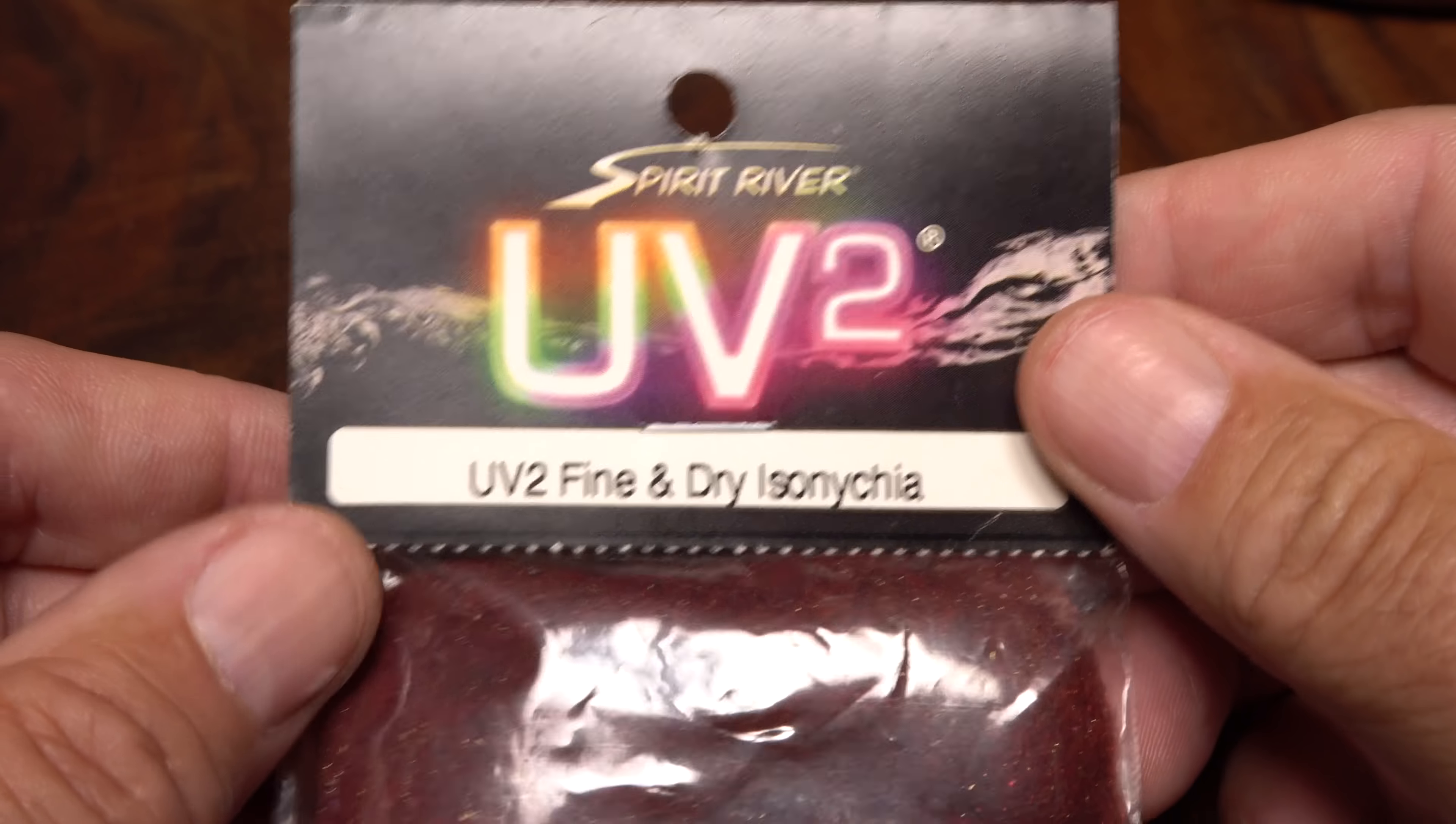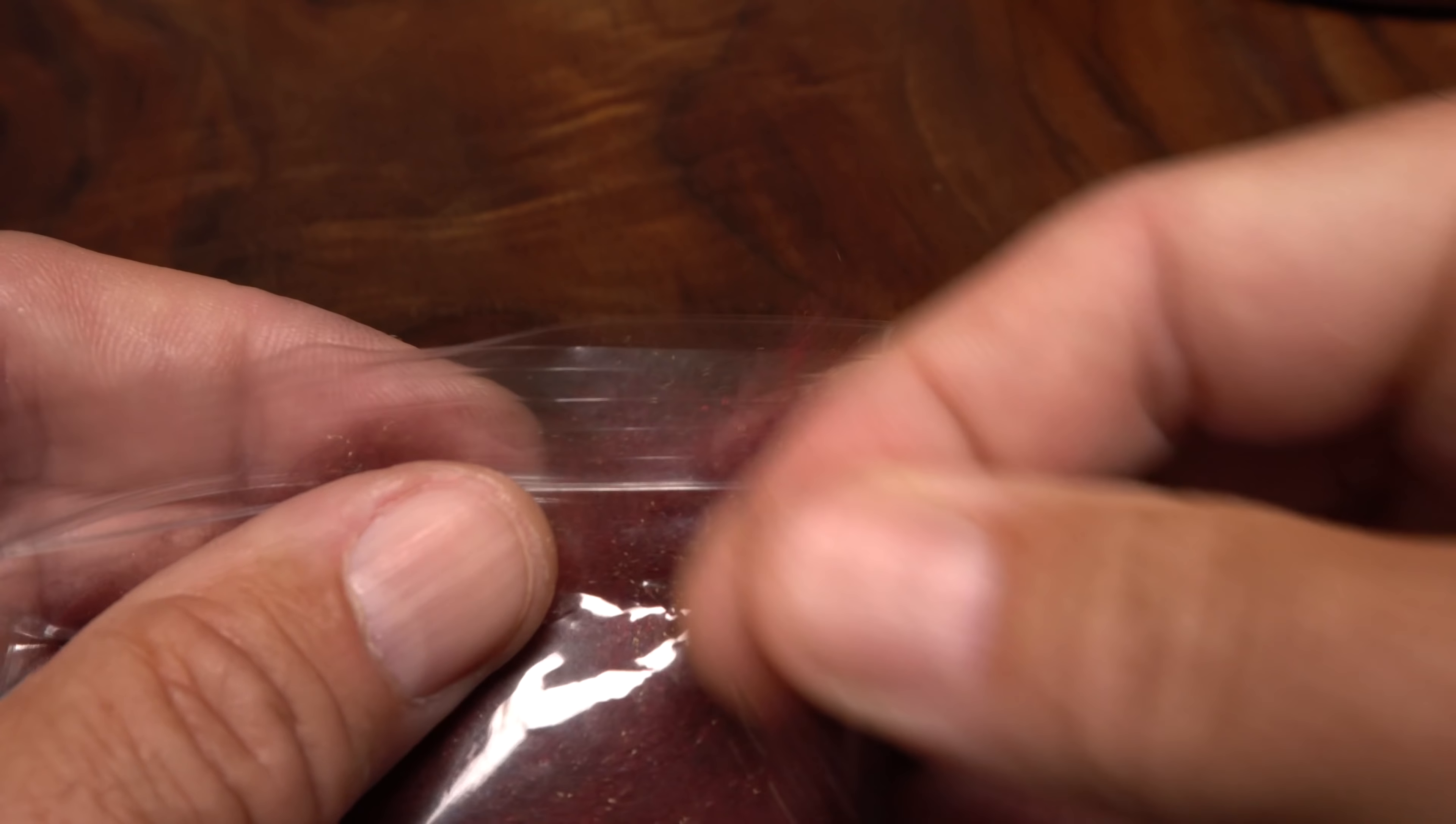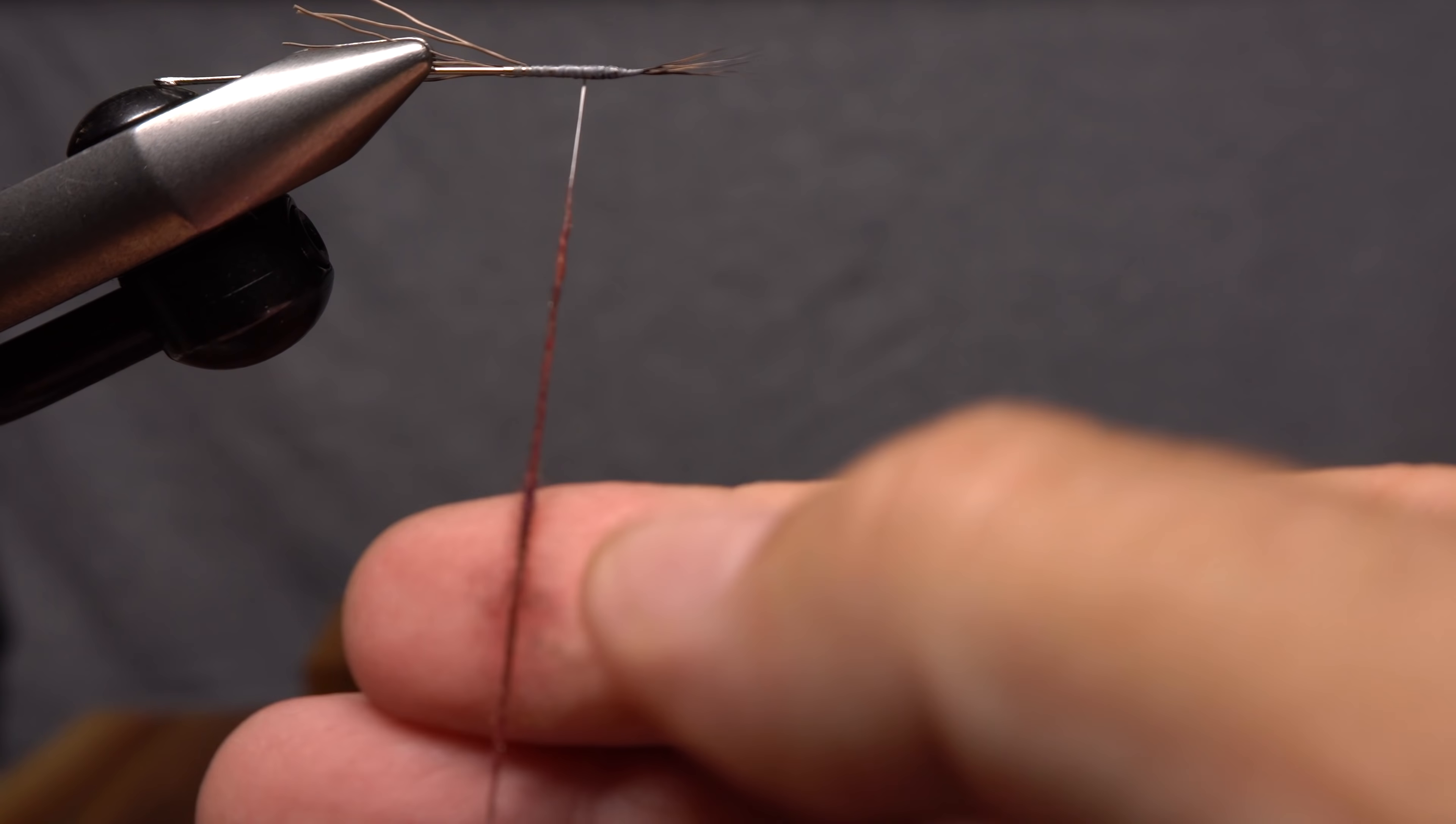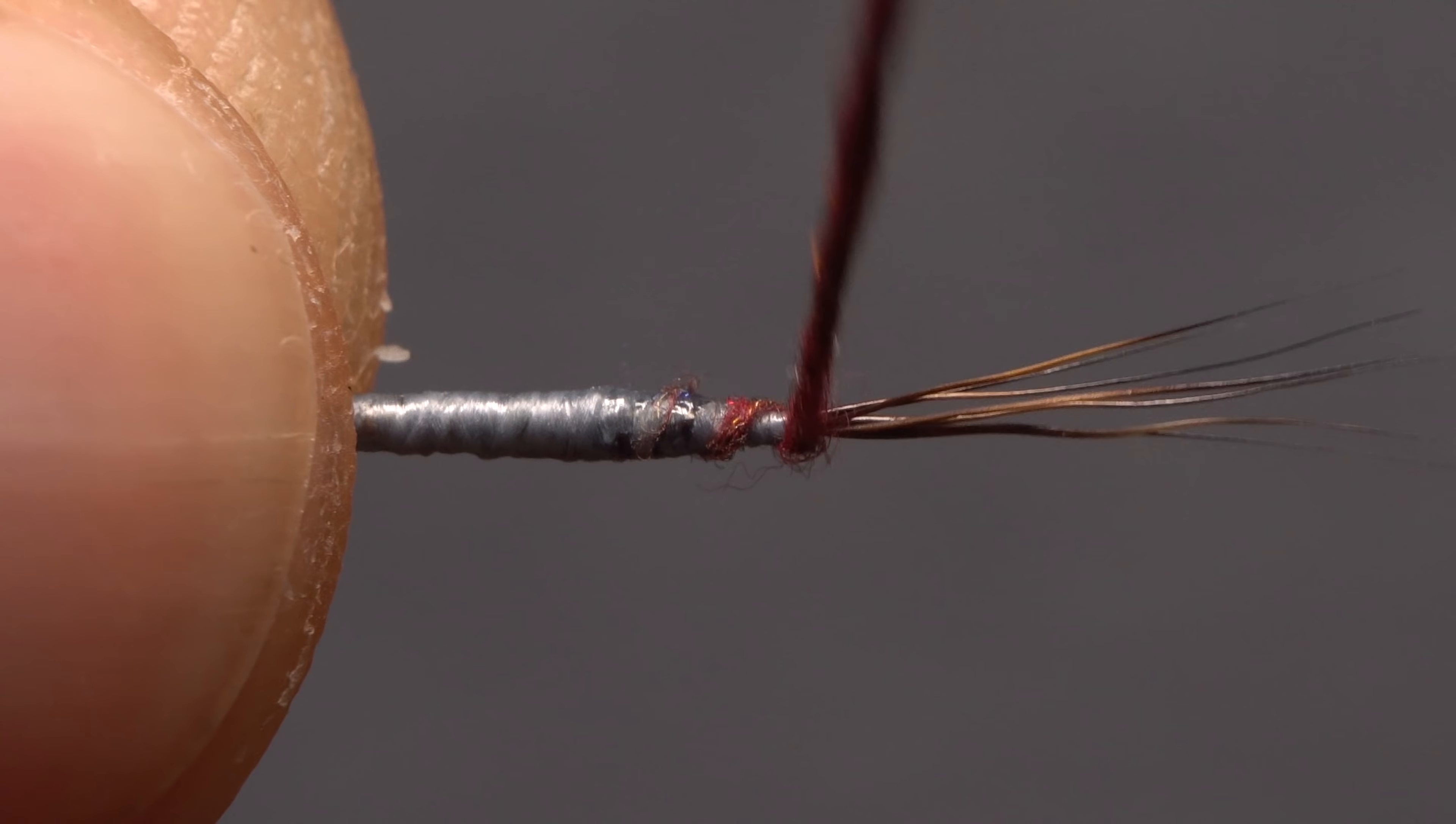UV-2 Fine & Dry Isonychia Dubbing is used for the rest of the fly's body, both the extended abdomen and the thorax. Pull an ample pinch free from the packet and use it to create a thin, 3-inch long dubbing noodle on your tying thread that's tapered at both ends. Really try to keep the noodle slender.